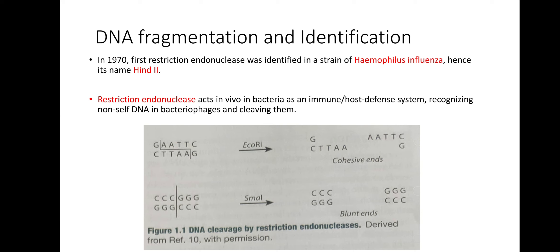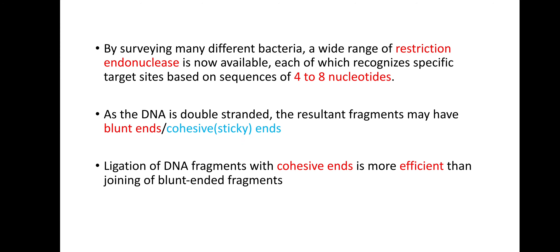DNA Fragmentation and Identification: In 1971, restriction endonuclease was identified in a strain of Haemophilus influenzae, hence it is named HIND2. Restriction endonucleases act in vivo in bacteria as a host defense system, recognizing non-self DNA in bacteriophages and cleaving them. By surveying many different bacteria, a wide range of restriction endonucleases is now available, each recognizing specific target sites based on 4 to 12 nucleotides. As DNA is double-stranded, the resultant fragments may have blunt ends or cohesive (sticky) ends. Ligation of DNA fragments with cohesive ends is more efficient than joining blunt-ended fragments.